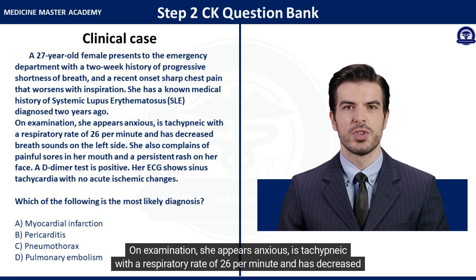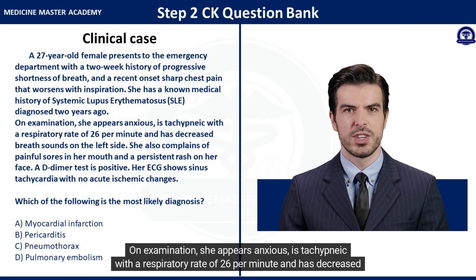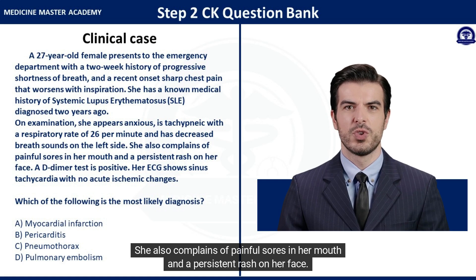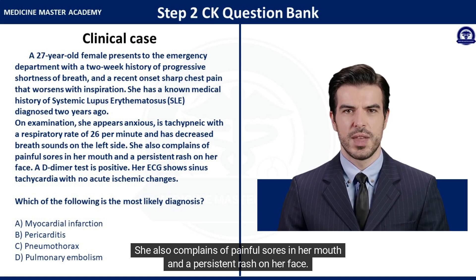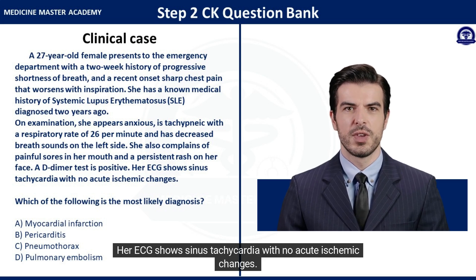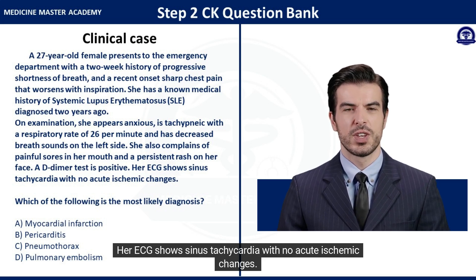On examination, she appears anxious, is tachypneic with a respiratory rate of 26 per minute, and has decreased breath sounds on the left side. She also complains of painful sores in her mouth and a persistent rash on her face. A D-dimer test is positive. Her ECG shows sinus tachycardia with no acute ischemic changes.